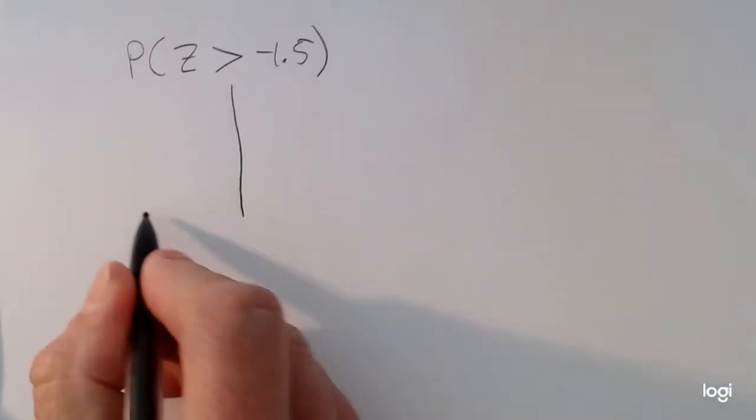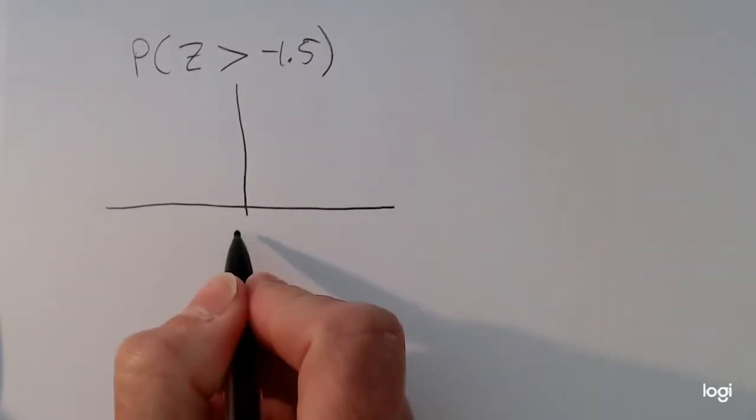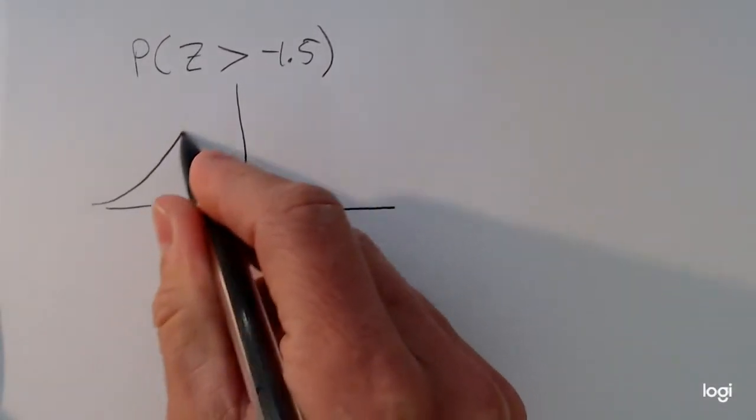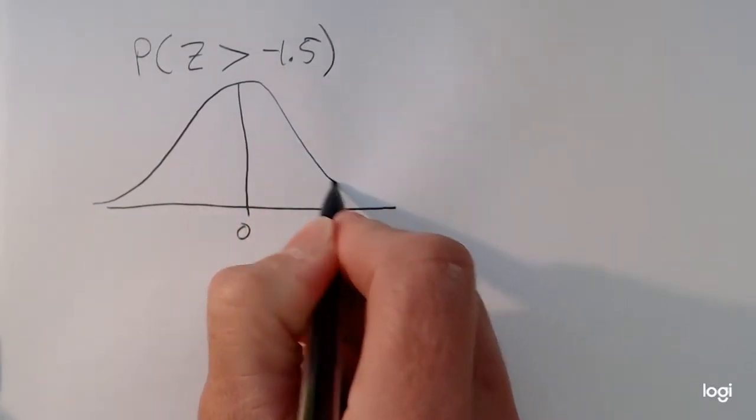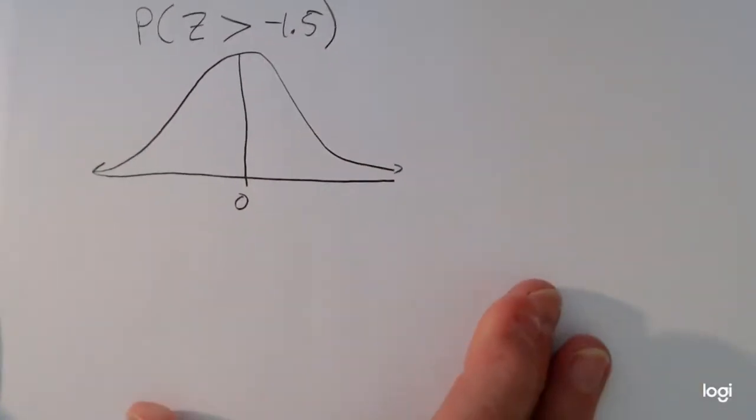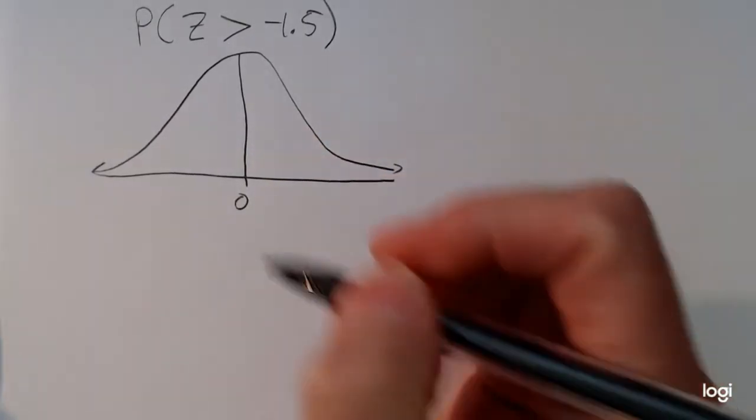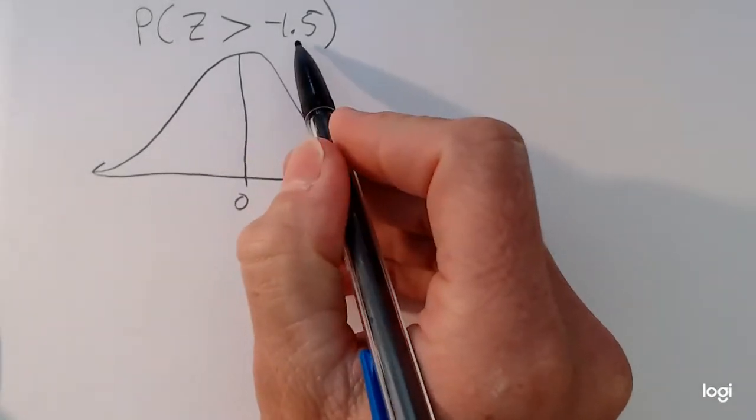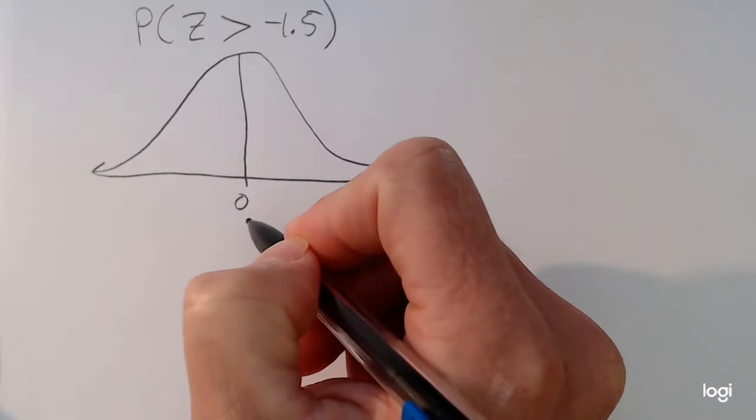So sketching that, drawing a reasonably bell-shaped curve—emphasis on reasonably—the z-score is negative, so I'll be putting that below zero.